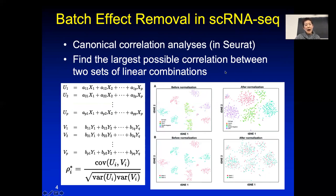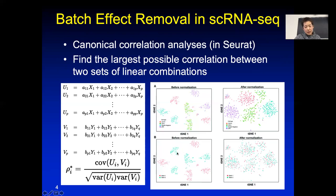After CCA projection in Seurat, you can see that the same cell type from two patients now clusters together. One cell type clusters together, a second cell type clusters together, and if there are real biological differences in a cell type between individuals, those still appear. In another example, samples that originally clustered by batch rather than cell type can, after proper normalization via CCA, correctly reveal distinct cell type clusters — allowing you to ask whether one patient has more of a particular cell type than another.